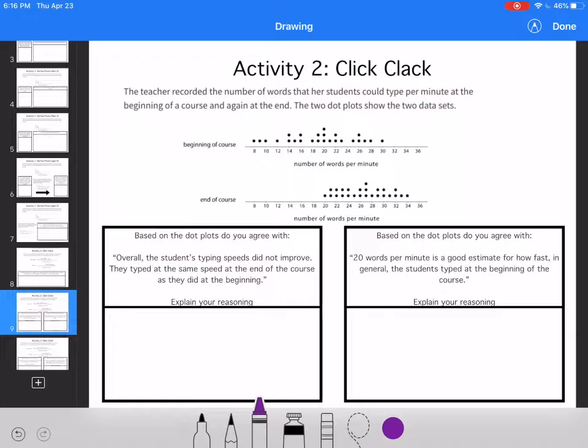So then, based on the dot plots, do you agree with overall, the students' typing speeds did not improve? They typed the same speed at the beginning and at the end of the course. Explain your reasoning. Well I disagree because she had students that were typing 8 words per minute, and then the lowest was 20 words per minute. And we don't even know if that's the same student. So I would say no, I disagree.